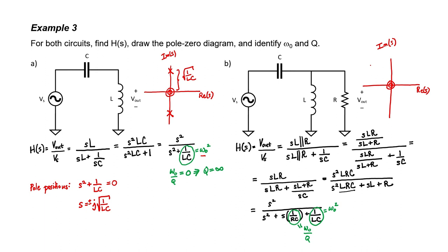Circuit B does have a resistor, so it burns power, and the pole positions are shifted into the left half-plane rather than lying along the imaginary axis. We can see that both circuits are essentially high-pass filters — they both have two zeros right at the origin and two complex poles.